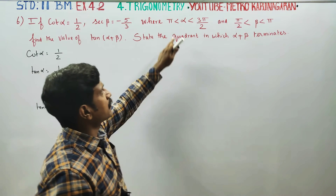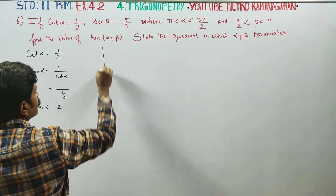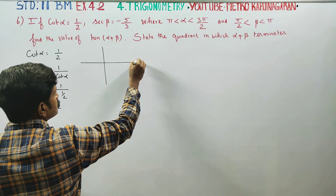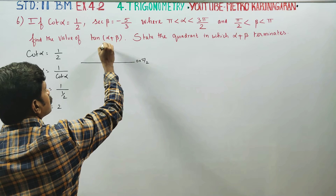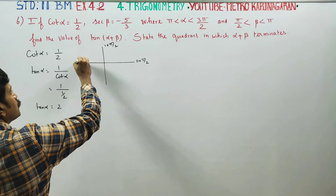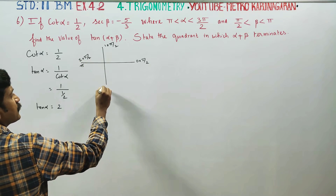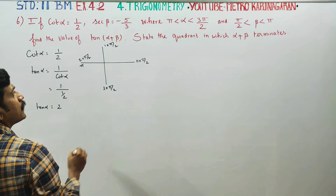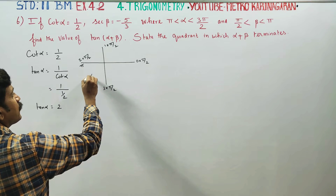Alpha is equal to π to 3π by 2. What is π to 3π by 2? This interval goes: 0 into π/2, 1 into π/2, 2 into π/2 which is π, and 3 into π/2 which is 3π/2. So if α is between π and 3π/2, this is the third quadrant.